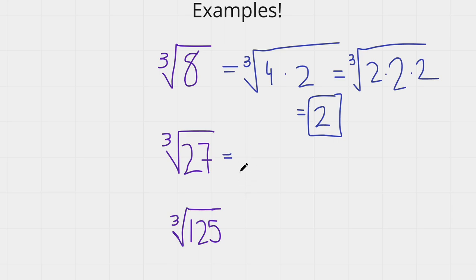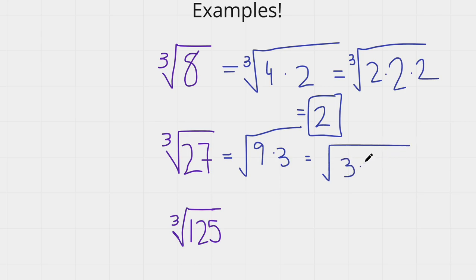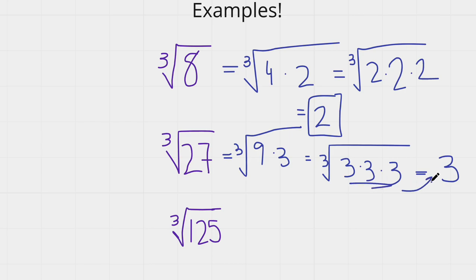Let's try the cube root of 27. Well, 9 times 3 is 27, and 9 is equal to 3 times 3. So we can write 3 times 3 times 3, which equals 3, because it's a cube root. Anytime a number is repeated 3 times inside the cube root, we take all of those numbers and the answer is just that number itself. The main rule is that anytime a number is repeated inside the radical for a cube root — if it's repeated 3 times — the answer is the number itself.